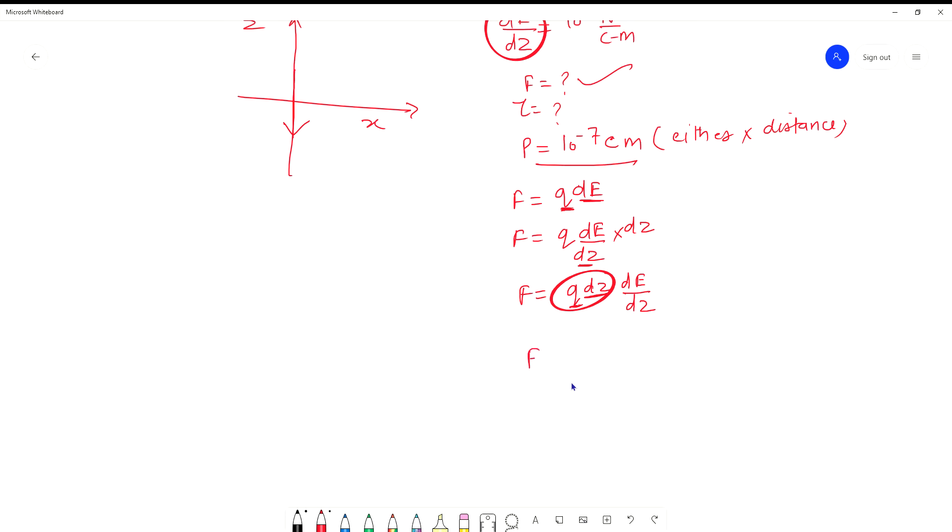F is equal to P into dE/dz. The P value is minus 10 raised to power minus 7, and dE/dz value is 10 raised to power 5. This gives 10 raised to power minus 2. The minus sign represents that the force will be repulsive in the direction of electric field increasing along z-axis, while the dipole moment is in negative direction.